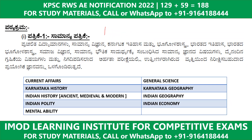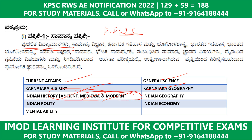For the General Paper RDWS, Rural Development is included. The topics include: General Science (Samanya Vignana), Karnataka History and Karnataka Geography, Indian History (Ancient, Medieval, Modern), Indian Geography, Indian Policy, Indian Economy, and Mental Ability. These subjects are covered in the General Studies Paper.